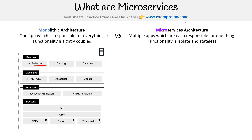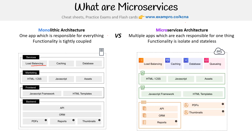The idea is you have multiple apps, each responsible for one thing, and the functionality is isolated and stateless. Here, you're using the cloud service provider's load balancer, caching, database, and queuing — or you might be spinning these up in your cluster as isolated apps rather than using cloud service provider services.